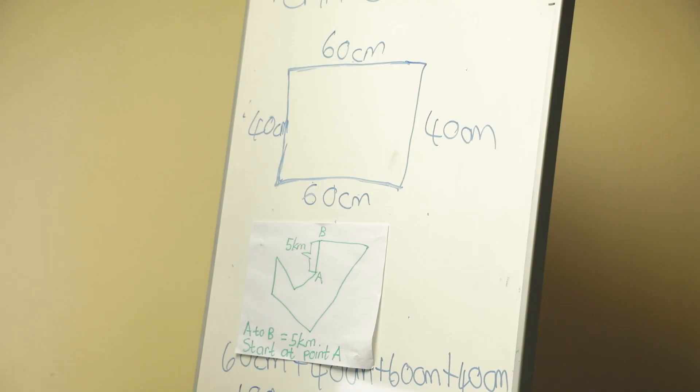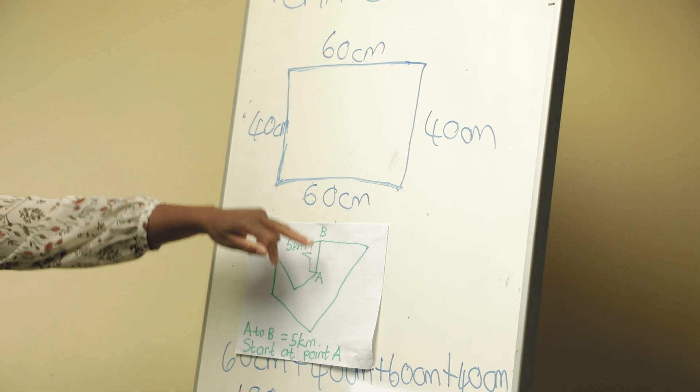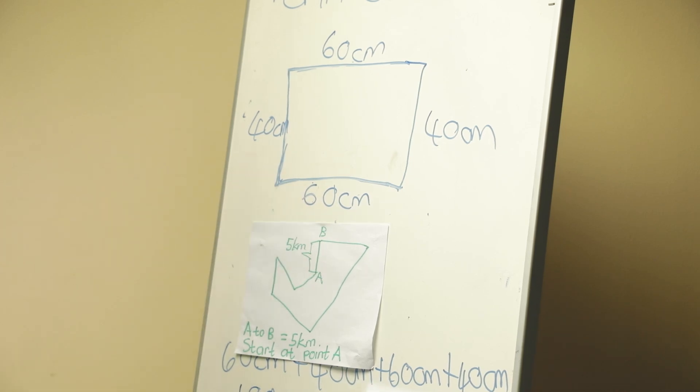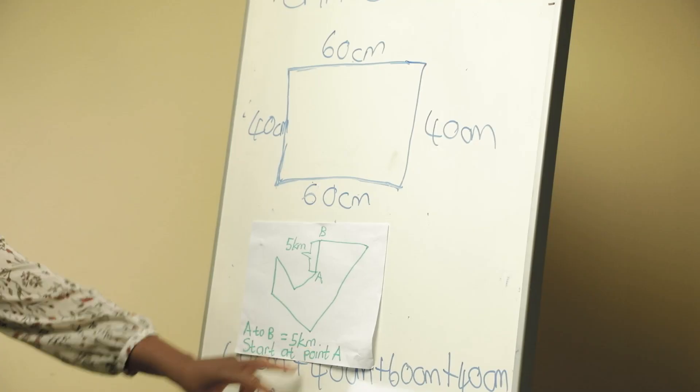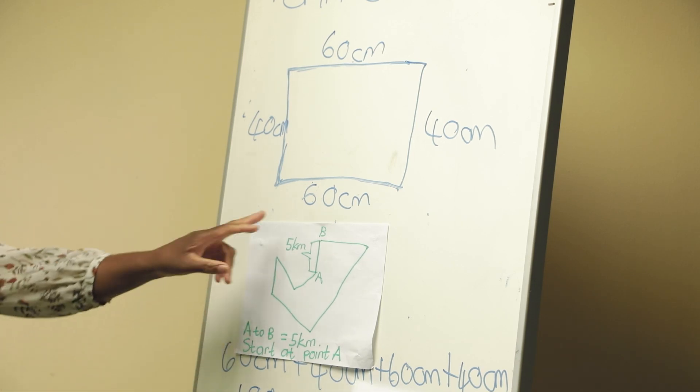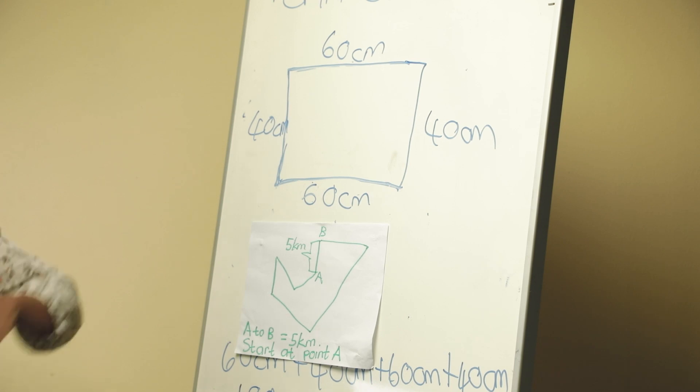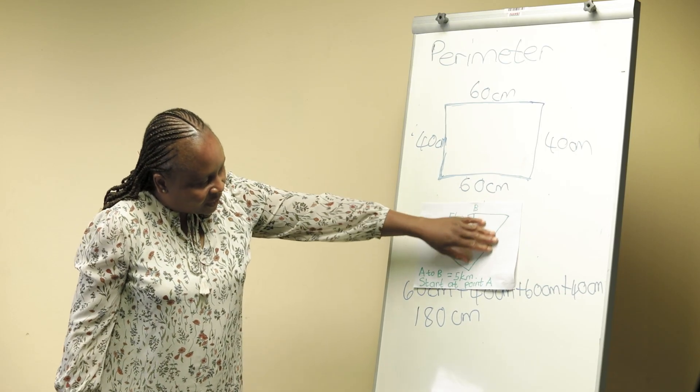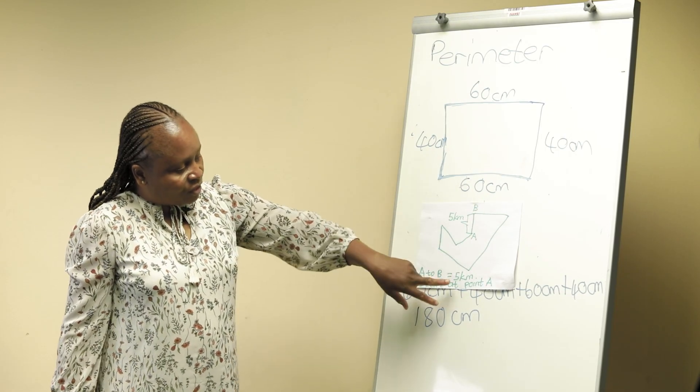Here is the task. We have point A to B which represents five kilometers. Your starting point is A. You are going to use a ruler to measure this in centimeters, but you are going to change it to kilometers.